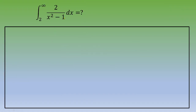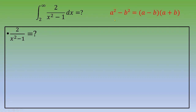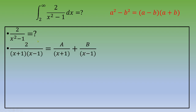First, we are going to take care of this quantity: 2 over x squared minus 1. We need to modify the denominator using the remarkable identity a squared minus b squared equals a minus b times a plus b. Applying this, we get 2 over x plus 1 times x minus 1, which we decompose as capital A over x plus 1 plus capital B over x minus 1.